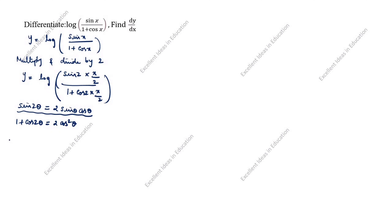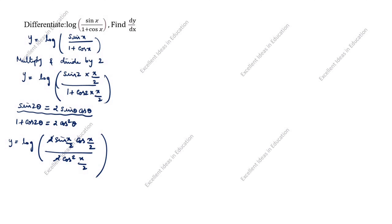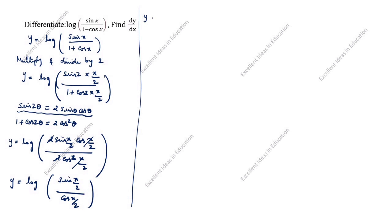Next step: y is equal to log of [2 sin(x by 2) cos(x by 2) divided by 2 cos square(x by 2)]. Here one cos(x by 2) cancels, leaving y is equal to log of [sin(x by 2) divided by cos(x by 2)]. Since sin divided by cos is tan, we write y is equal to log of tan(x by 2).